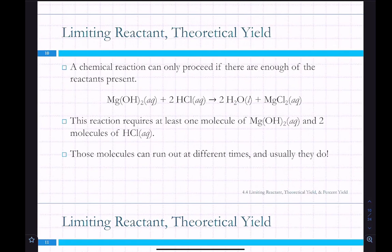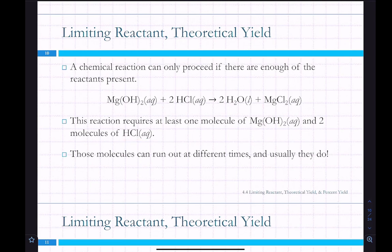You can only have a chemical reaction if you have enough of both reactants. If you took high school chemistry, you probably talked about limiting reactant and theoretical yield. After a chemical reaction, you might end up with one reactant left over. For this magnesium hydroxide reaction, you need at least one molecule of Mg(OH)2 and at least two molecules of HCl to get any reaction. Usually you run out of one thing before the other.